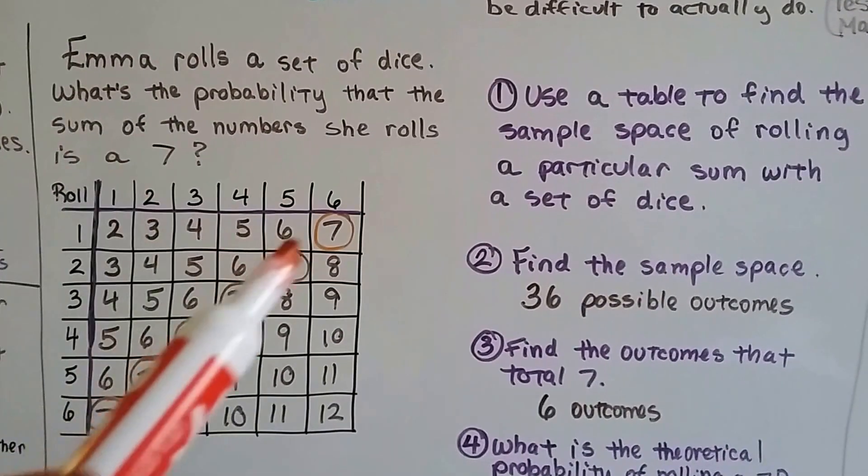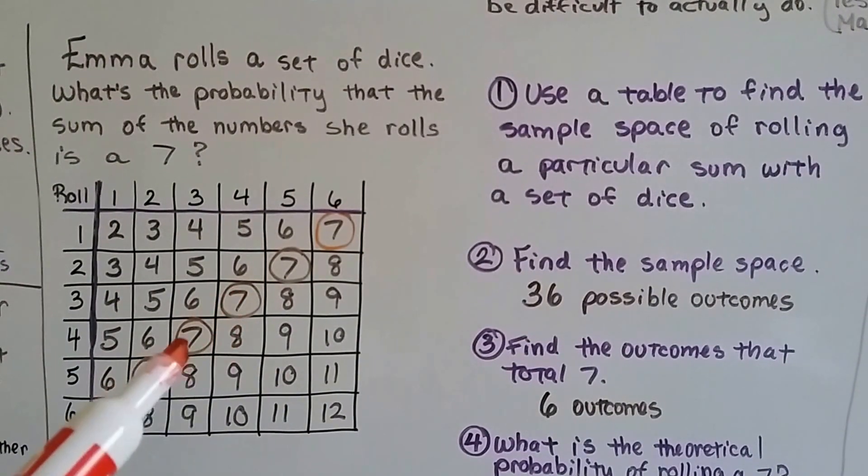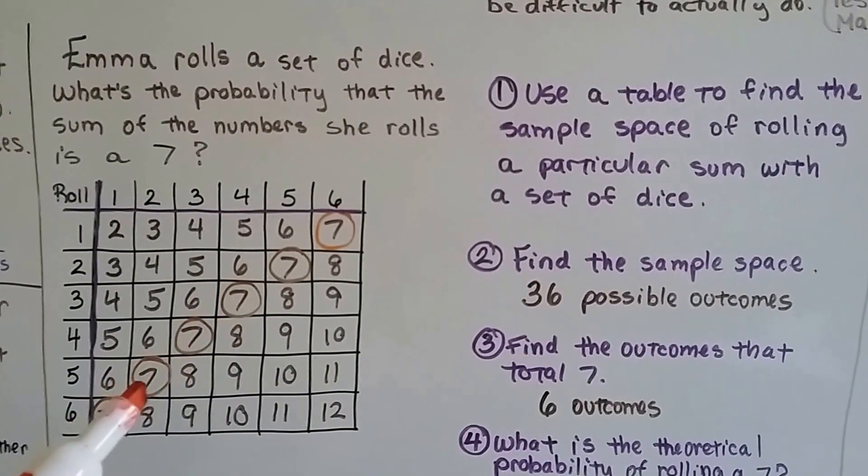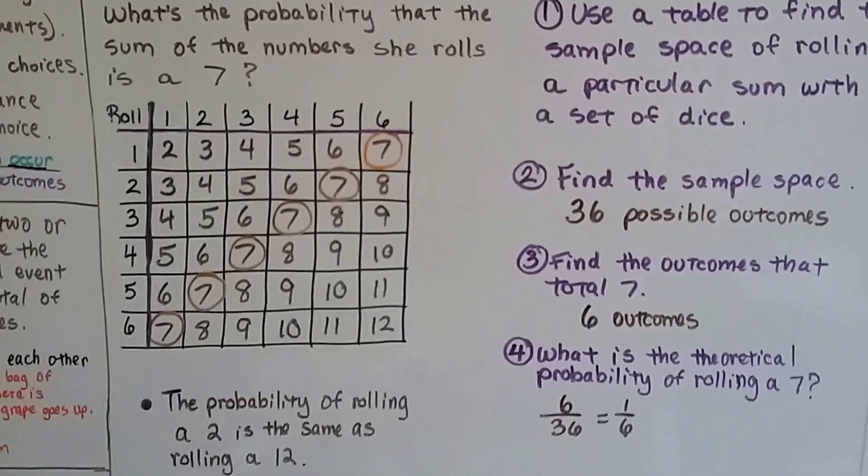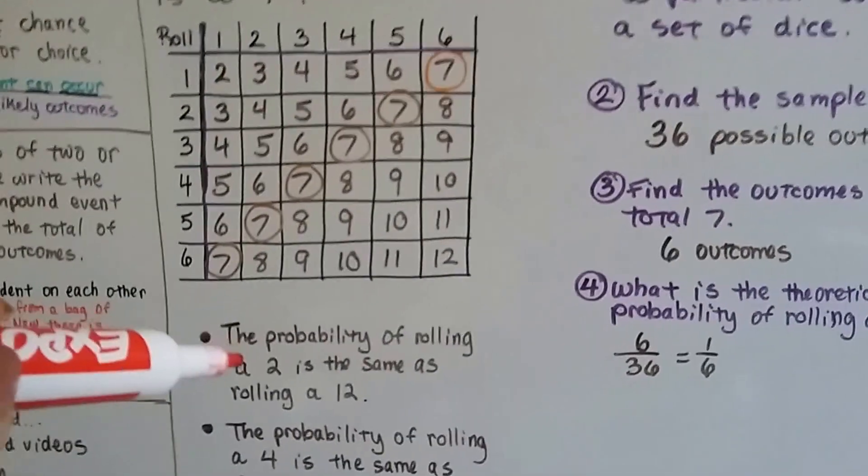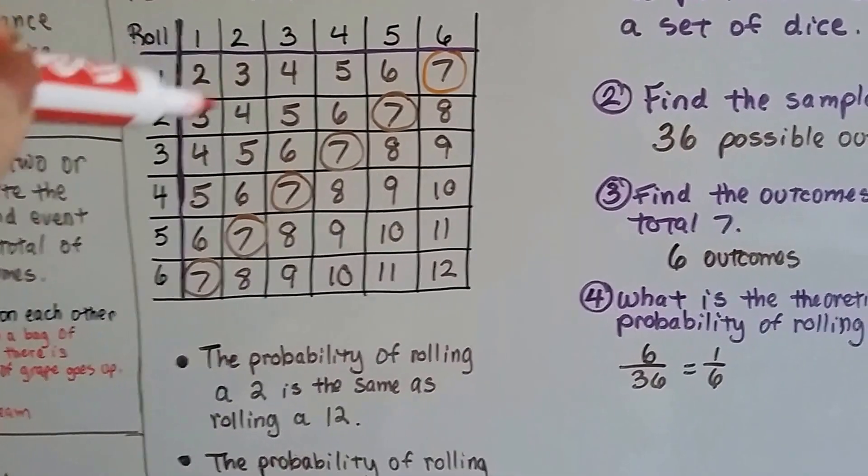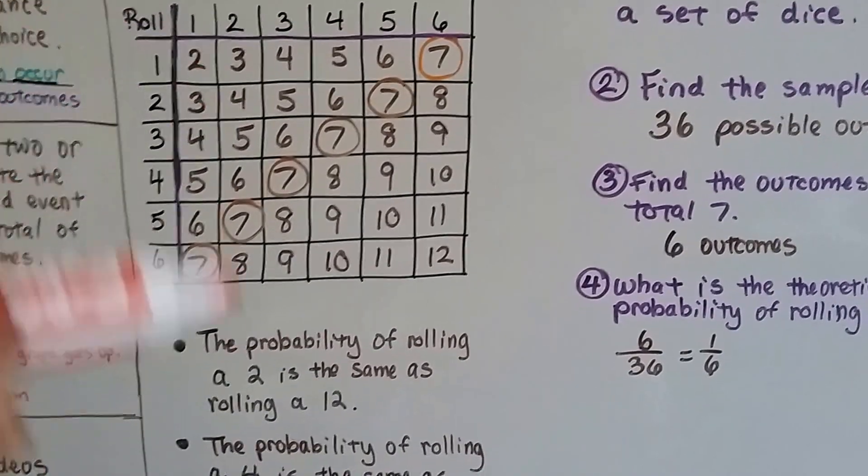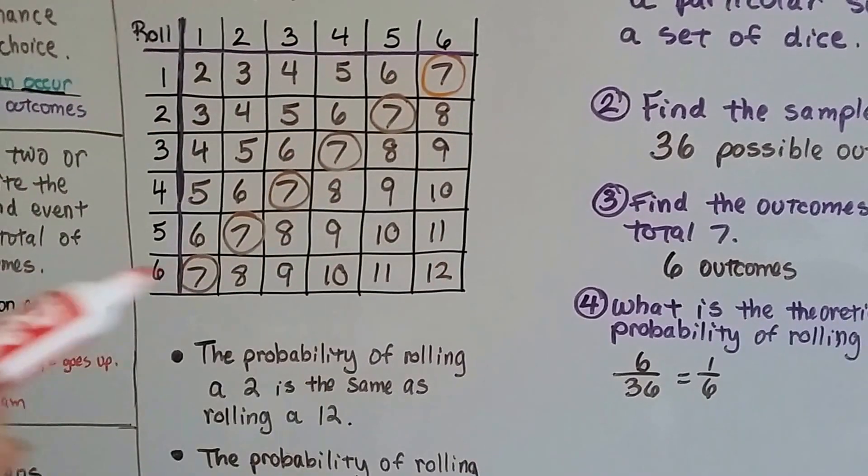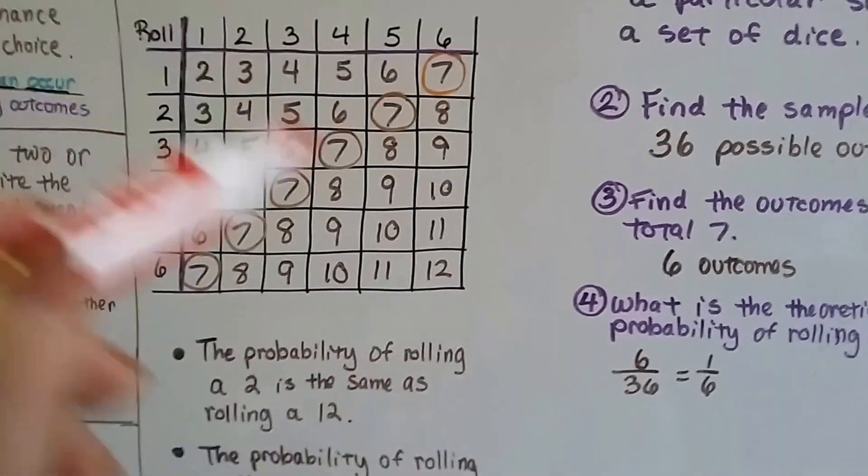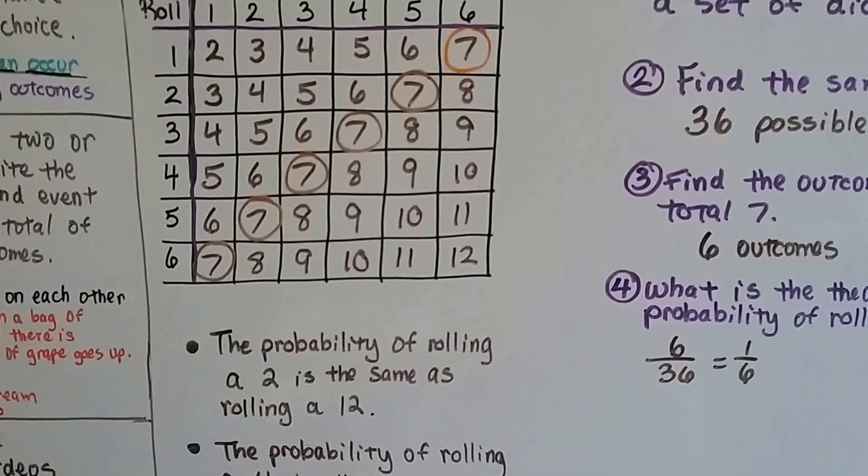For her to roll a 7, she would have to roll a 6 and a 1, or a 5 and a 2, or a 4 and a 3, or a 4 and a 3, or a 5 and a 2, or a 6 and a 1. The probability of rolling a 2 would be a 1 and a 1. There's only one chance of rolling a 2. It's the same probability as rolling a 12, because there's only one 6 and one 6 to make the 12. So they have the same probability, the same percentage of chance of getting a 2 or a 12.